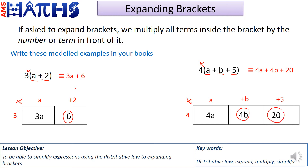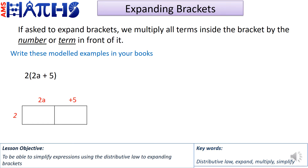It's plus 4b because we got a positive 4b in our box, and plus 20 because we got a positive 20. In our third example, the two terms in the brackets are 2a and 5. I've drawn two boxes with those terms above them, and 2 to the left. So 2 times 2a gives us 4a, and 2 times 5 gives us 10. Our answer is 4a plus 10.